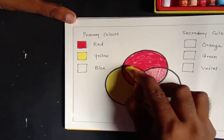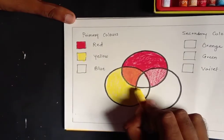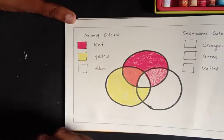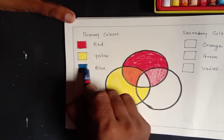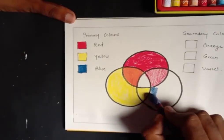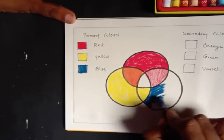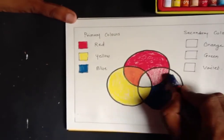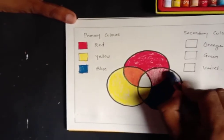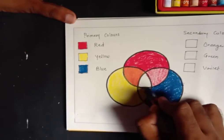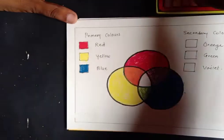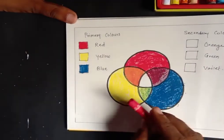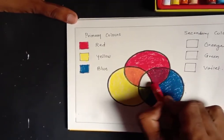With the mixture of yellow and red we create orange. With the mixture of blue and yellow we get green, and with the mixture of red and blue we create violet.